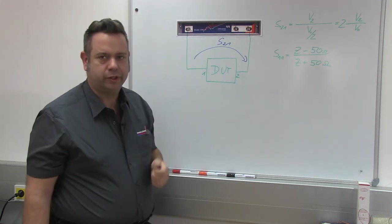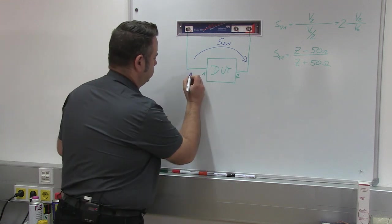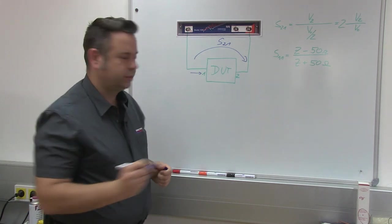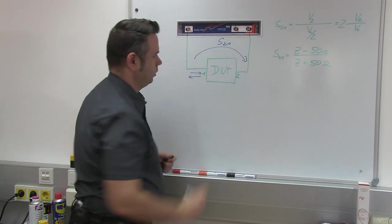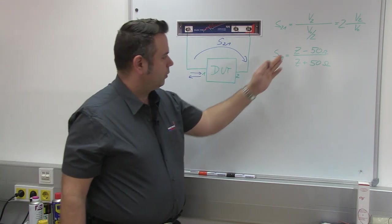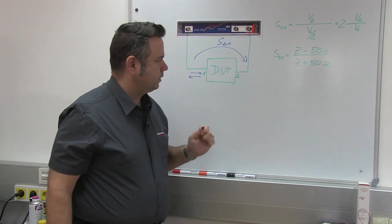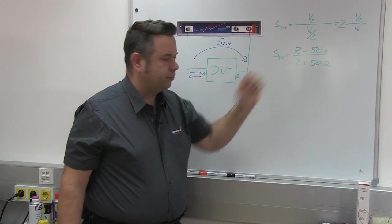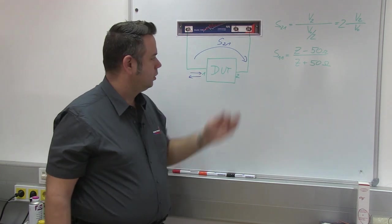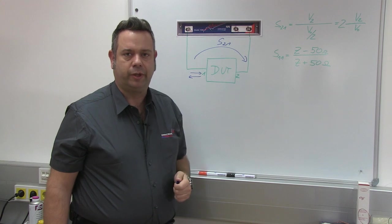There's a second scattering parameter that you can measure, which is S11. It is the signal that we send into the device under test and the reflected signal. This can be shown in the formula where Z is the input impedance of our device under test and the 50 ohms is the impedance of the system. So S11 and S21 are the values that we will measure now.